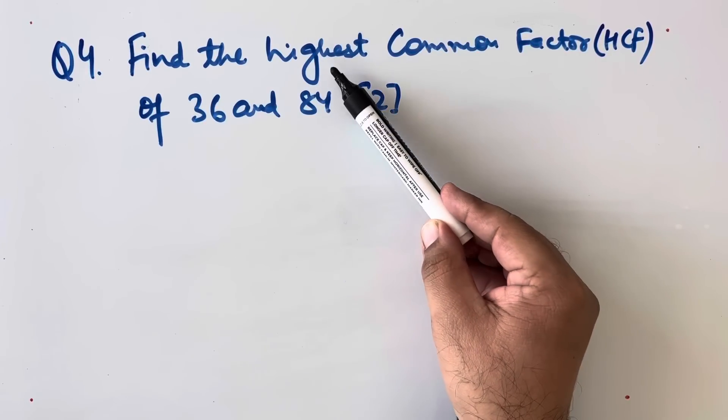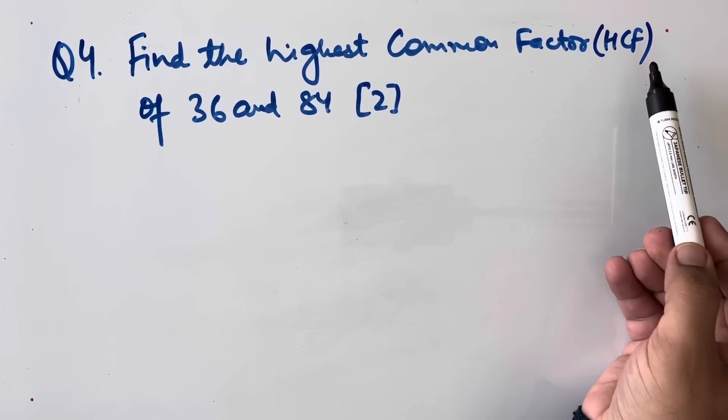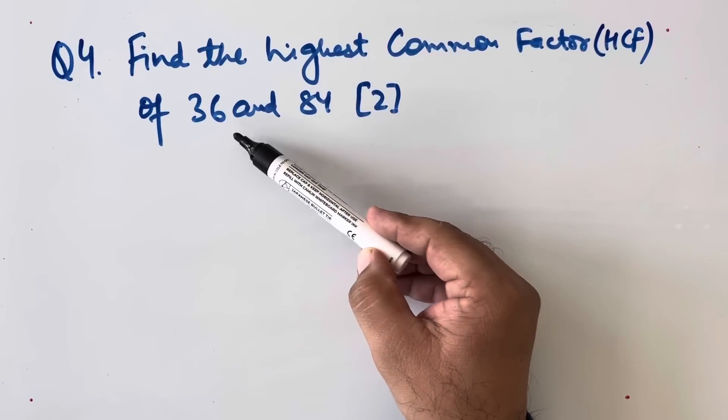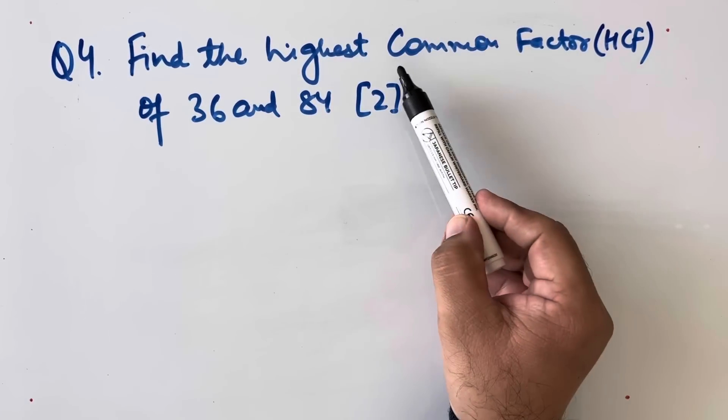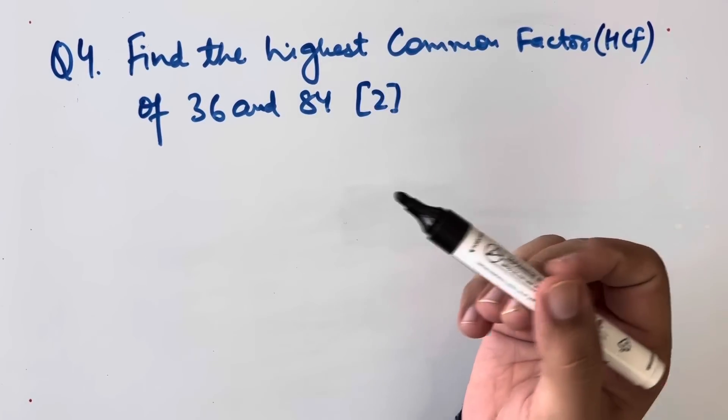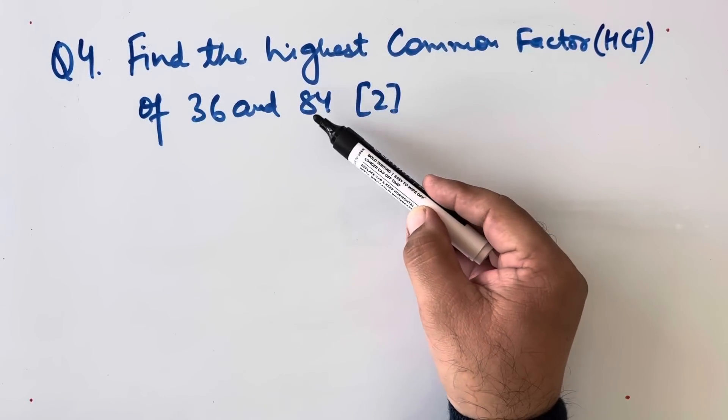Question 4. Find the highest common factor, that is HCF, of 36 and 84. This is 2 marks question. So we will be writing 36 and 84.